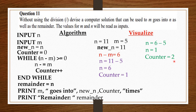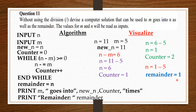The condition to enter the while loop is that n minus m is greater than or equal to 0. From the second loop, n equals 1. So, 1 minus 5 will give us a value that is less than 0, so we can't enter this loop anymore. We jump out and say remainder equals n. The remainder equals n, and n is 1, so the remainder equals 1. Then from there, we print: m goes into new_n counter times. That is, 5 goes into 11 two times and the remainder is 1. Which is true. So, that's it for the algorithm.